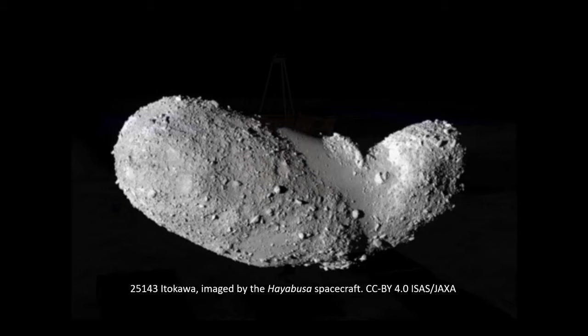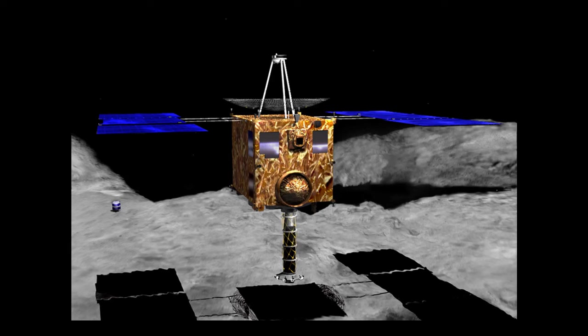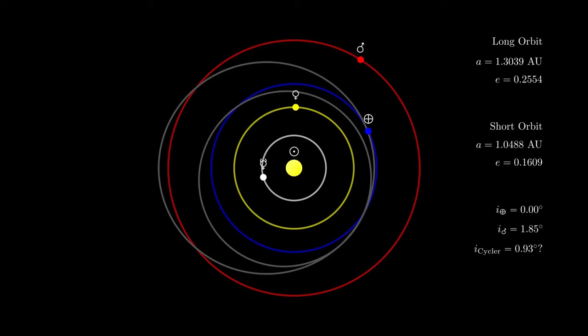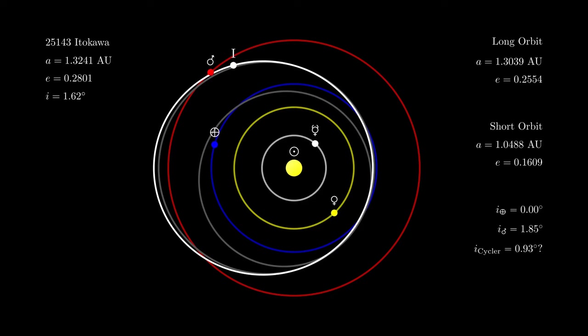This is 25143 Itokawa. It was visited in 2005 by the Japanese Hayabusa spacecraft, and was the first asteroid to have a sample brought back to Earth. It's half a kilometer long, it weighs approximately 35 million tons, and it happens to have very close to the same orbit as the long orbit of the Mars cycler. That was valuable for Hayabusa because that orbit gives it relatively low delta-v to get there from Earth. And it's valuable for the Mars cycler because it's a lot of mass that's already pretty close to where we need it.